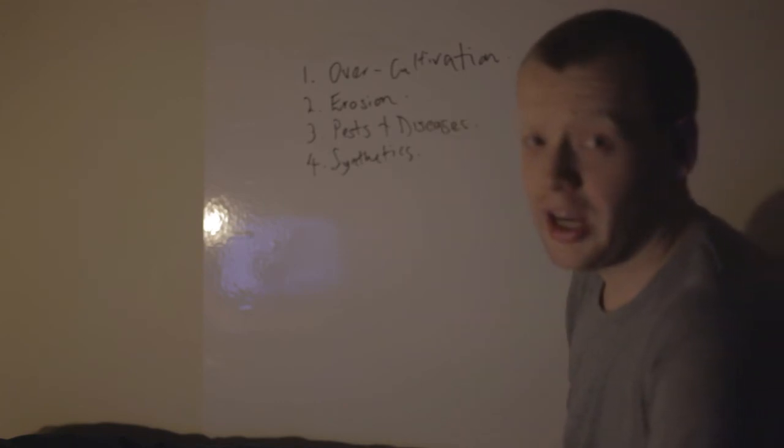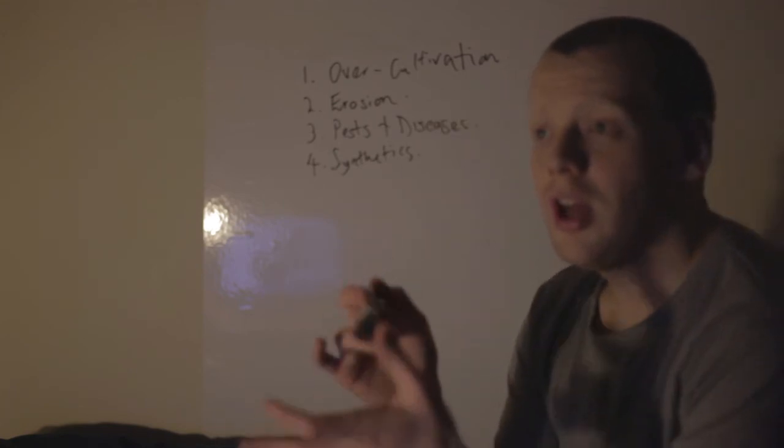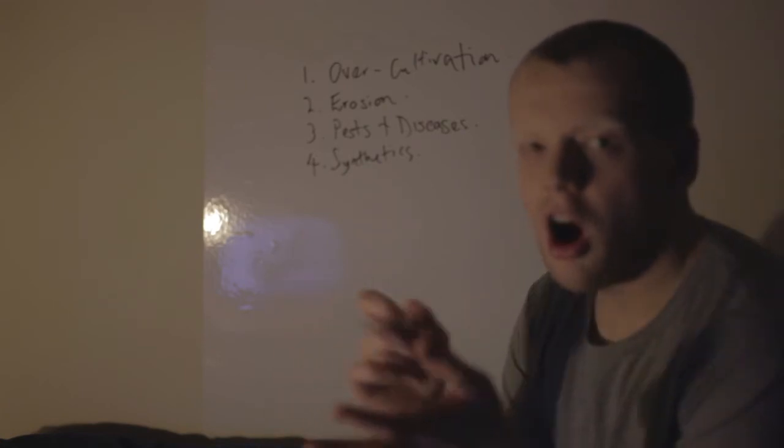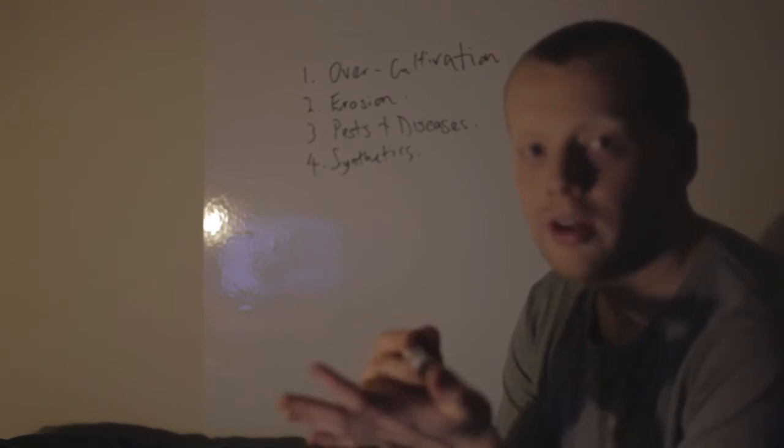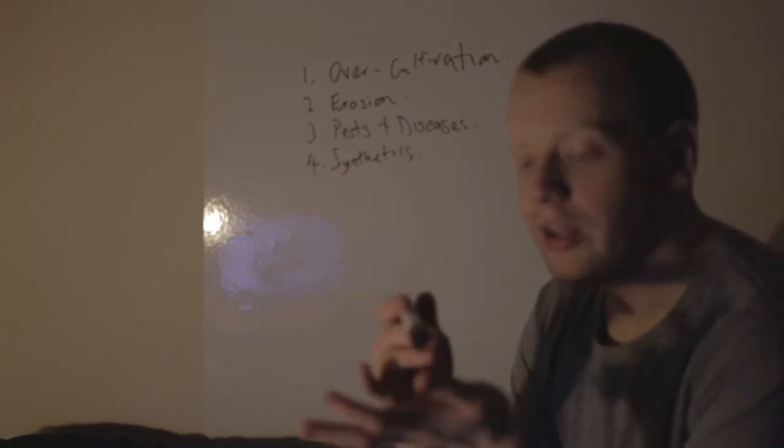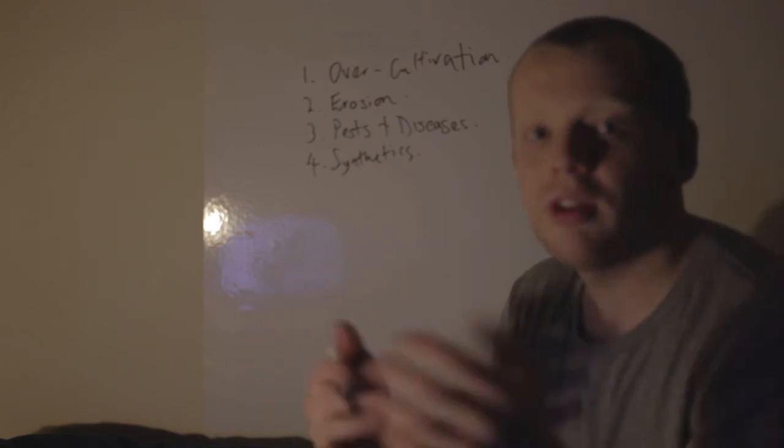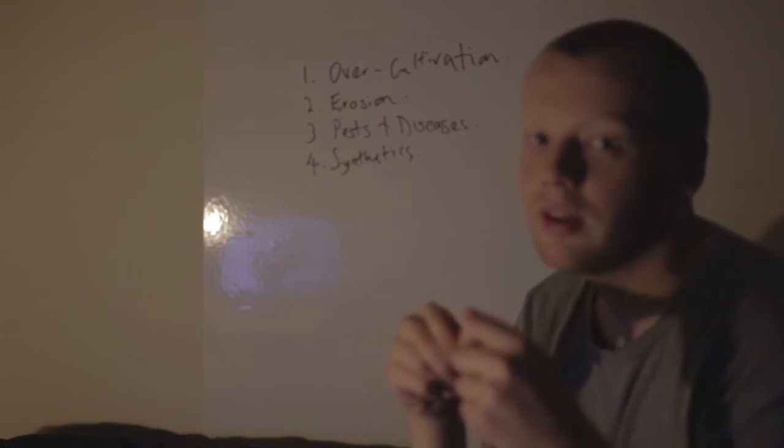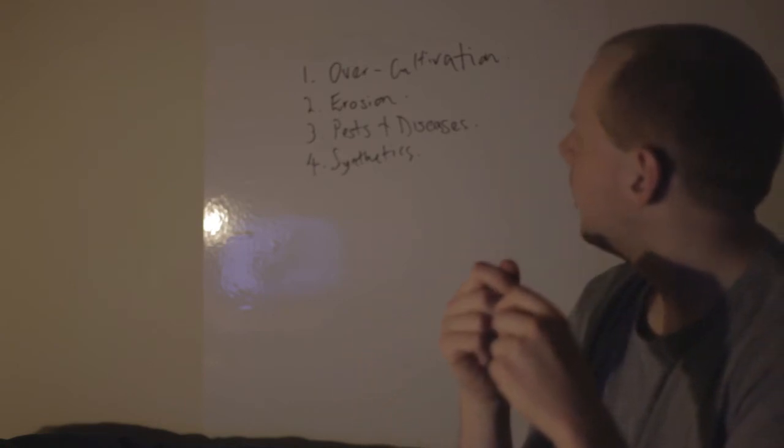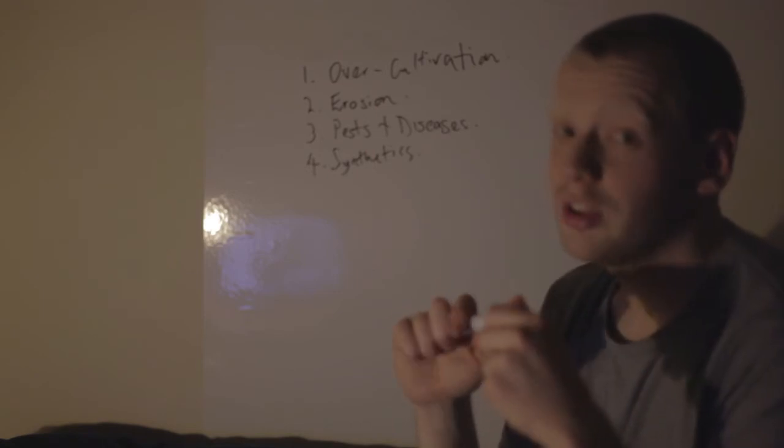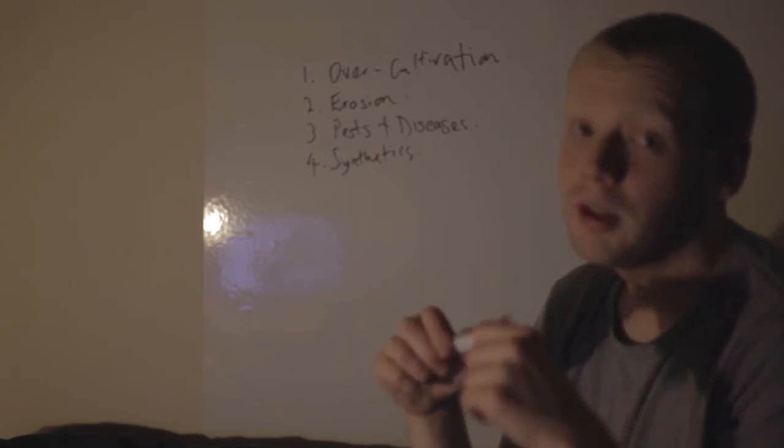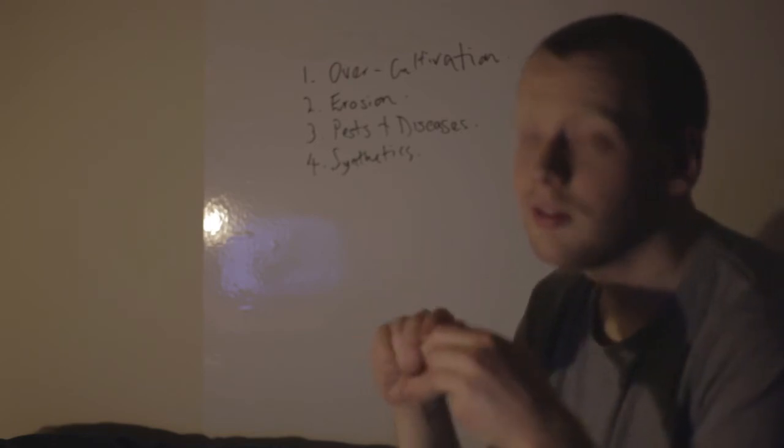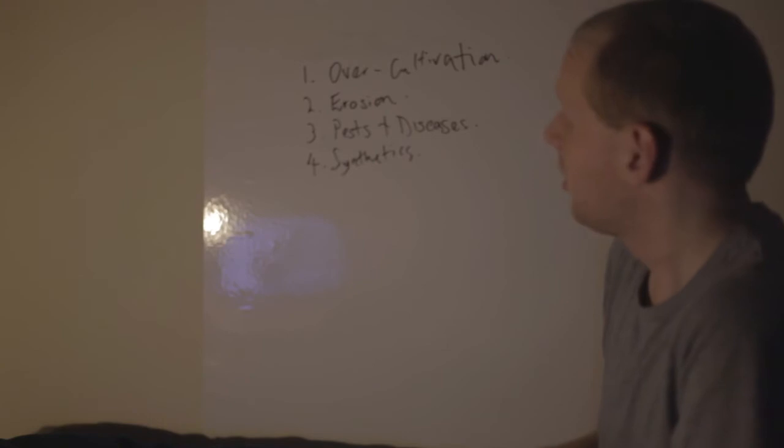Erosion, you can counteract that by mulching. So mulching, you can go to a local tree surgeon or arborist in your area. And you can negotiate a price or maybe they give it to you for free for a trailer load or whatever, because they have to get rid of it usually. So it's not usually that expensive for a whole trailer load, maybe between 40 and a hundred pounds. I don't know, something like that. Maybe even cheaper.